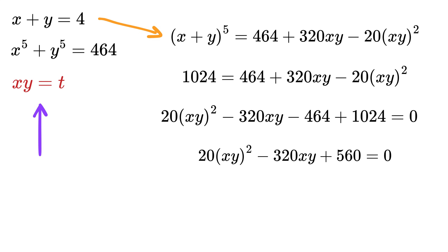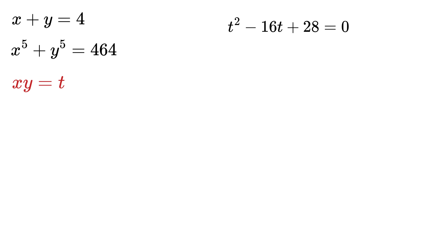Let us assume xy equals t and divide by 20 on all sides to get t² minus 16t plus 28 equals 0. Solving this quadratic equation, we get t equals 2 or t equals 14, which means xy equals 2 or xy equals 14.